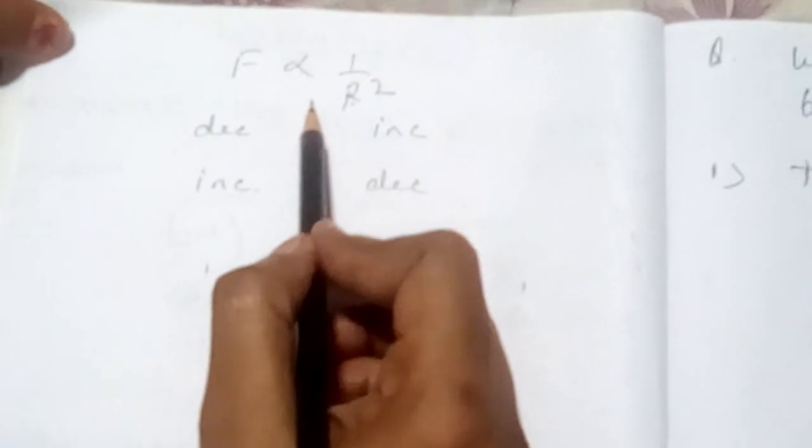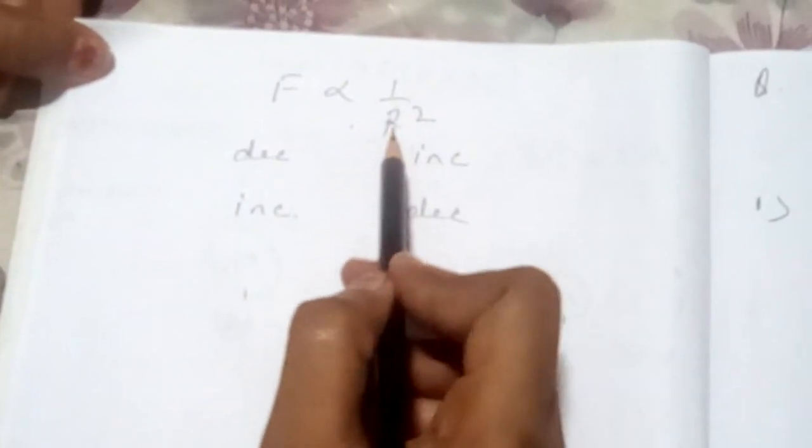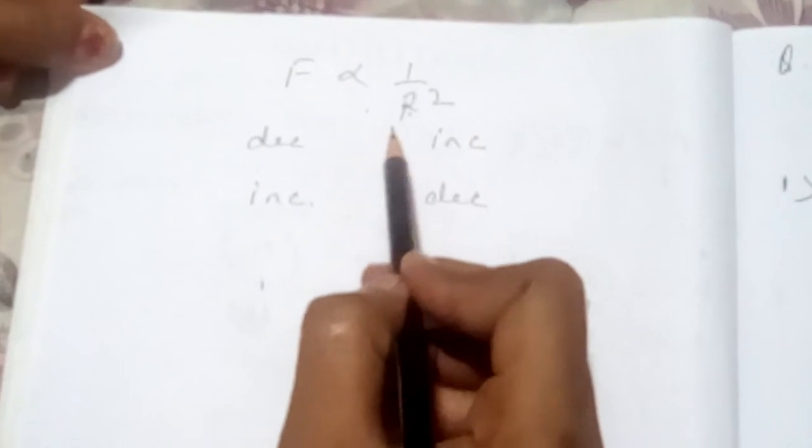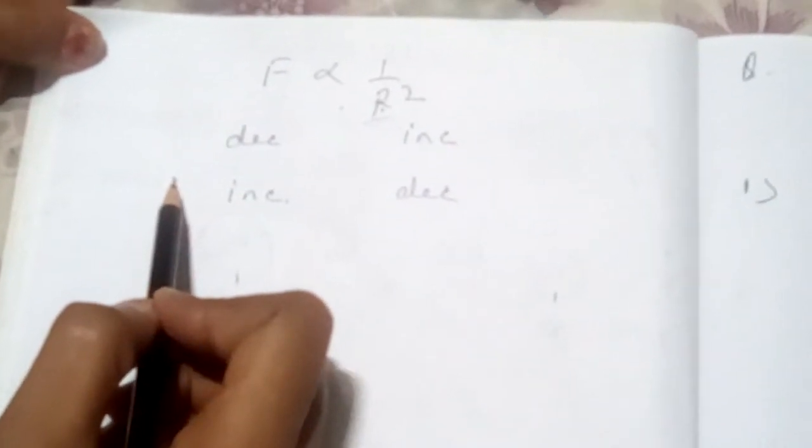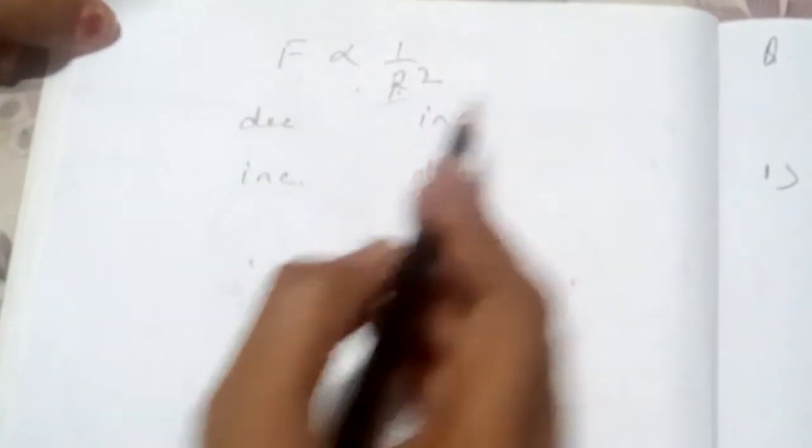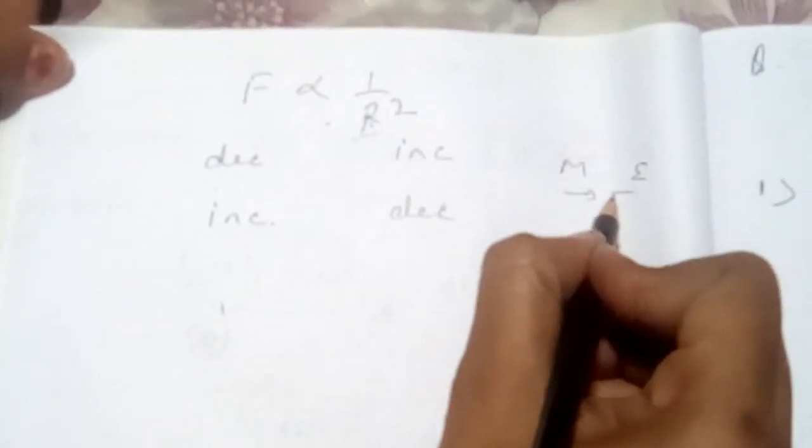Yes, this is applied: the distance between earth and moon is more so force of attraction is less. That's why the moon is not falling on the earth. But moon is attracting earth and earth is also attracting the moon.